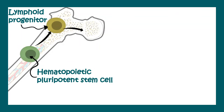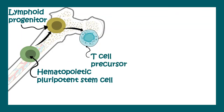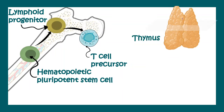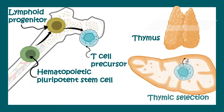From the lymphoid progenitor, T cell precursors are generated and they leave the bone marrow to reach the thymus. In the thymus, there is stringent training that these T cell precursors get.